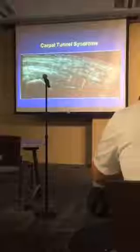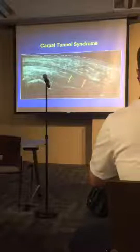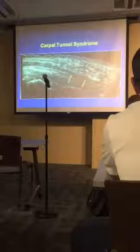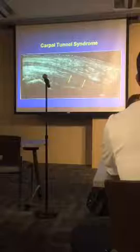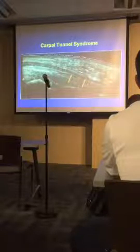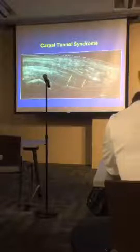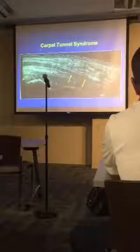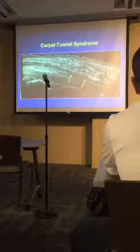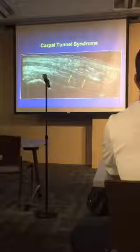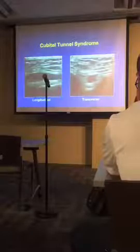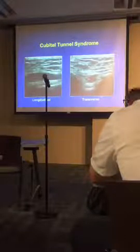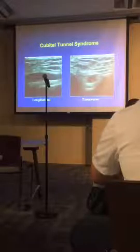By convention, many MSK ultrasound images are shown with superior on the left and right sides — however, MSK practitioners have agreed to disagree on this; you show it in the way that displays the anatomy most clearly, and the key is to label it properly. Swollen nerves lose their fascicular pattern — as shown here in cubital tunnel syndrome, the ulnar nerve at the elbow. Always correlate with the clinical picture, since swollen nerves can be asymptomatic. In a case of tibial neuropathy, following the nerve with ultrasound reveals a mass with a nerve entering and exiting it — localizing it as arising from the nerve itself. This was a neurofibroma of the tibial nerve.